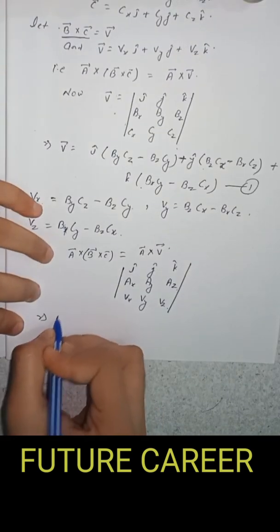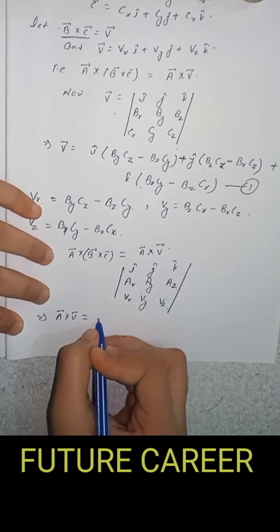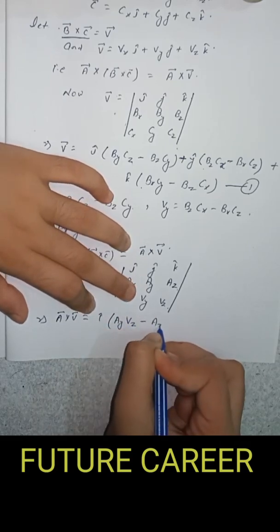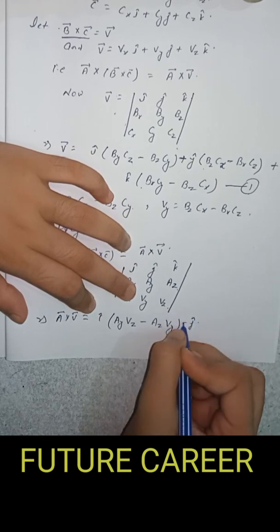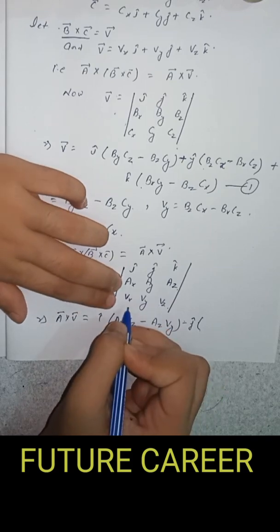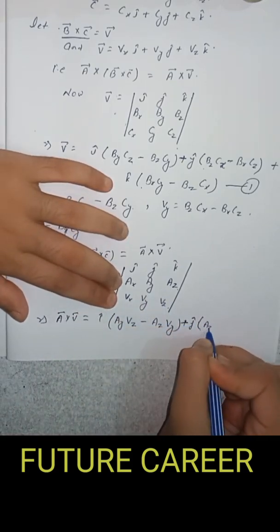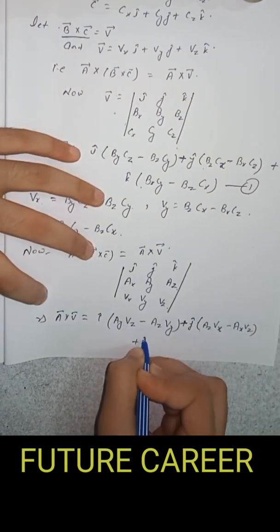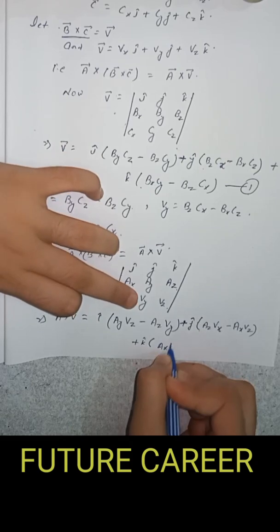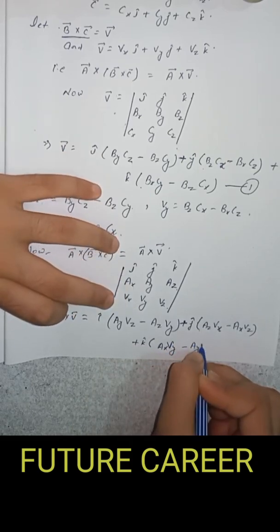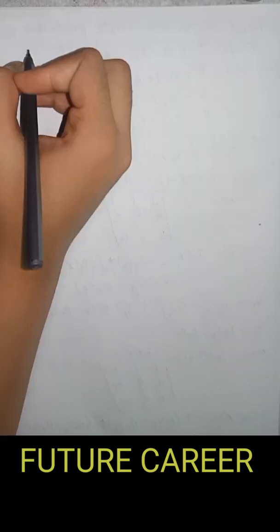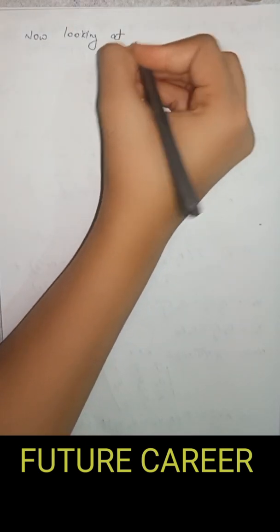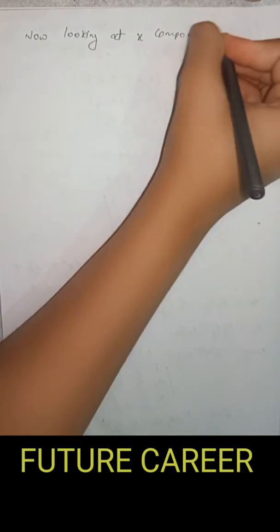A vector cross V vector equals i cap into Ay Vz minus Az Vy, minus j cap into Ax Vz minus Az Vx, which we can write as plus Az Vx minus Ax Vz, plus k cap into Ax Vy minus Ay Vx. Let this be equation A.